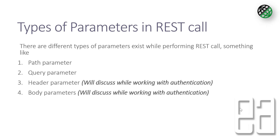Types of parameters in a REST call: there are different types of parameters that exist while performing a REST call — path parameters, query parameters, header parameters, and body parameters. The body parameter is not applicable for the GET call, but path parameters, query parameters, and header parameters are applicable for the GET request.